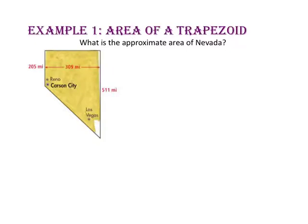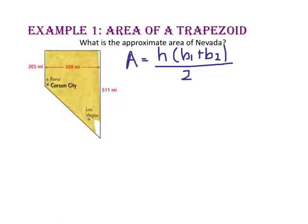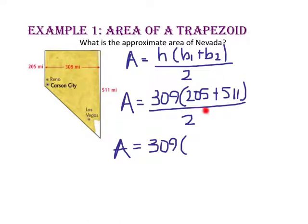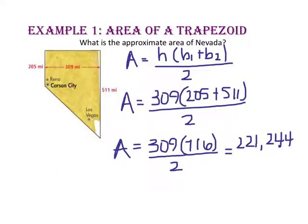In Example 1, we will find the area of a trapezoid. What is the approximate area of Nevada? Starting with the formula, area equals half the height times the sum of the bases. The base and height are always perpendicular, so the height is 309 miles and the bases are 205 miles and 511 miles. 205 plus 511 equals 716. 309 times 716 equals 221,244, divided by 2. The area of Nevada is approximately 110,622 square miles.